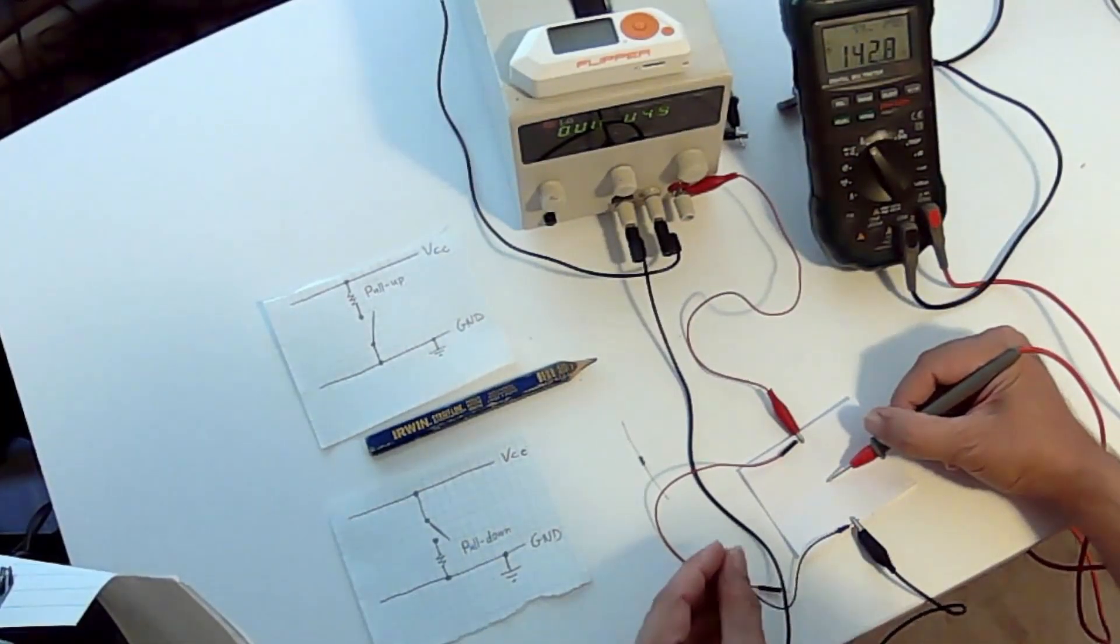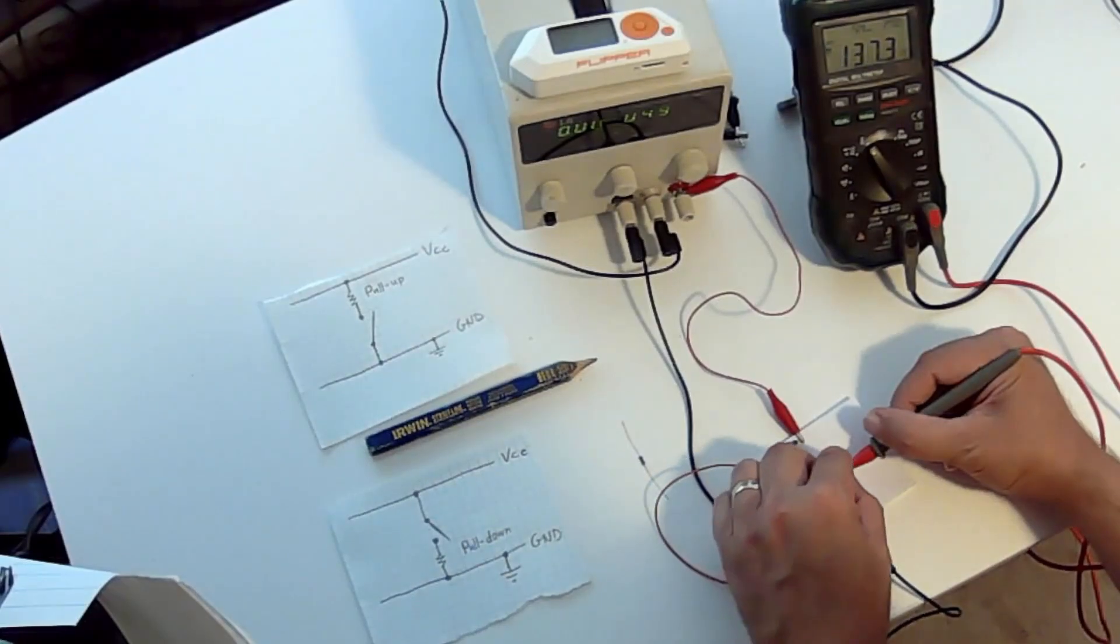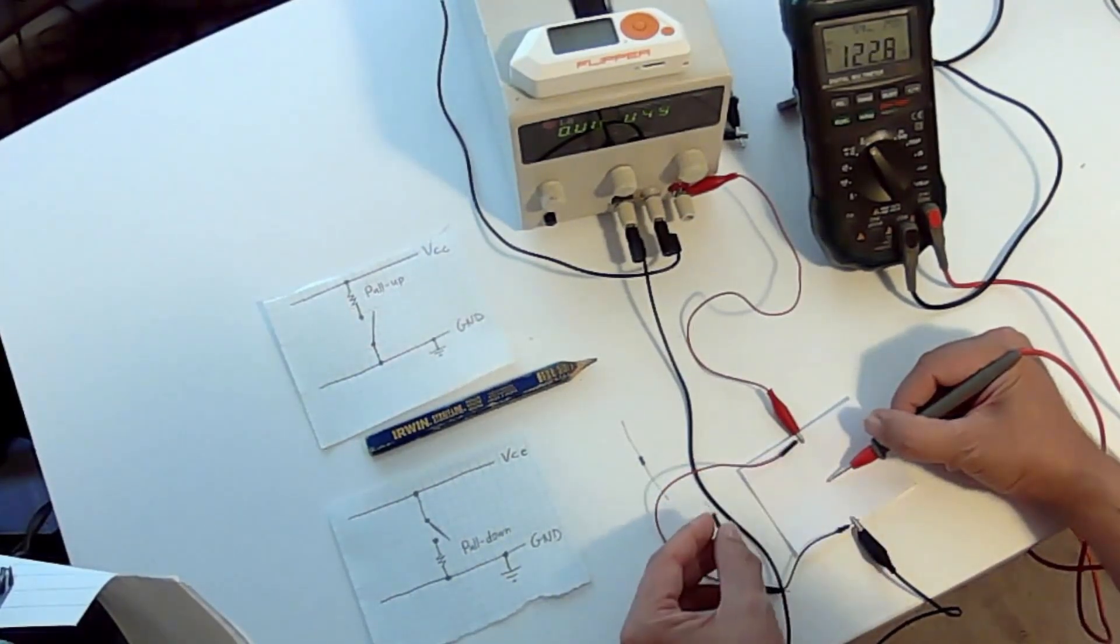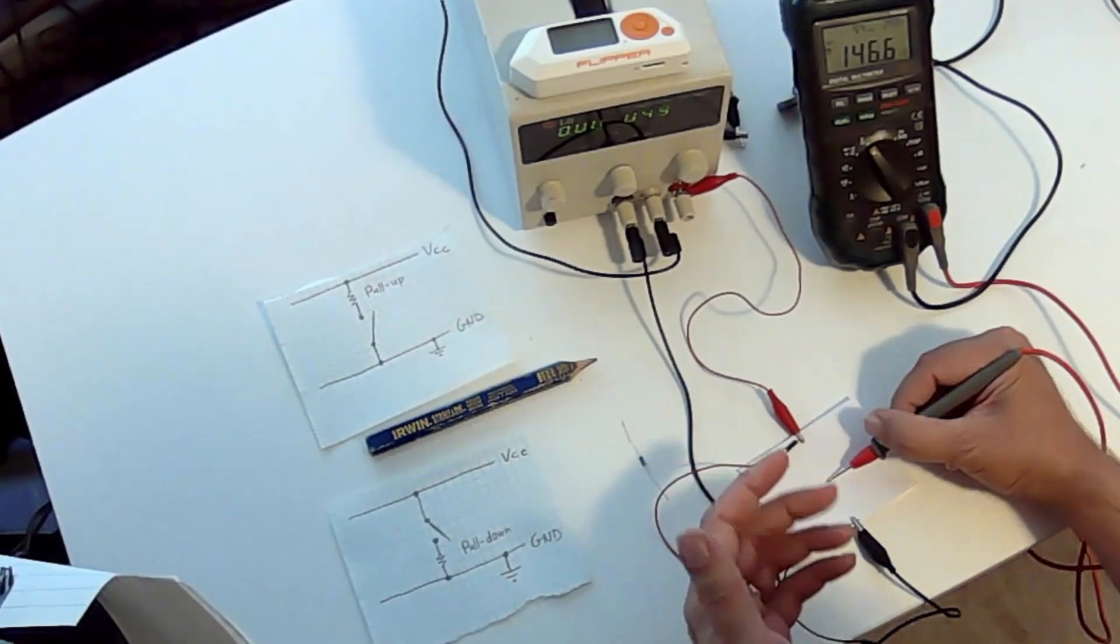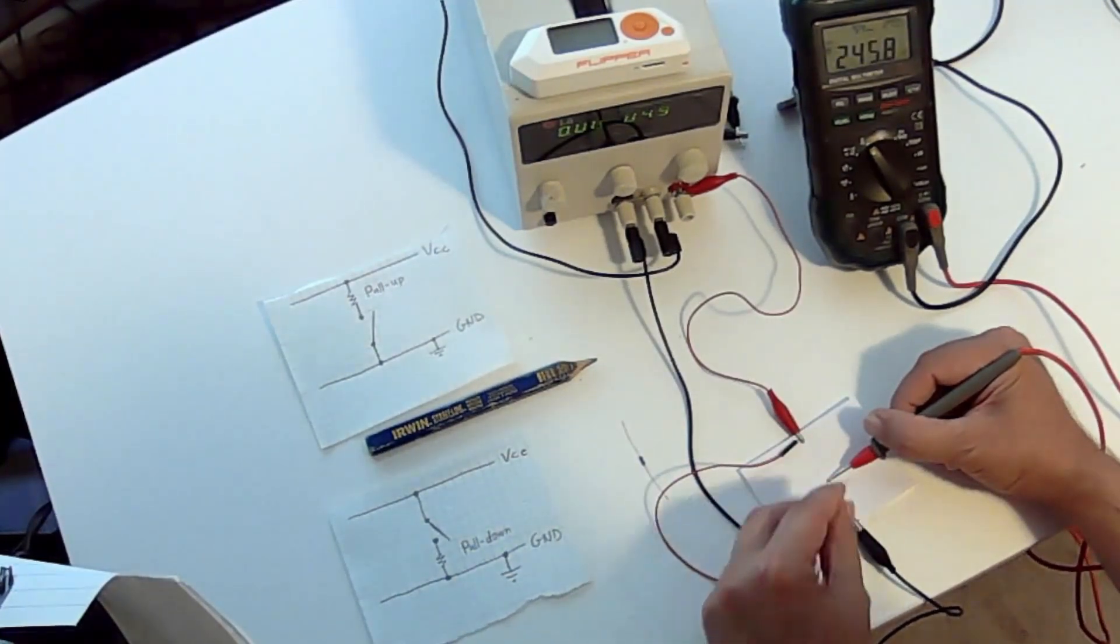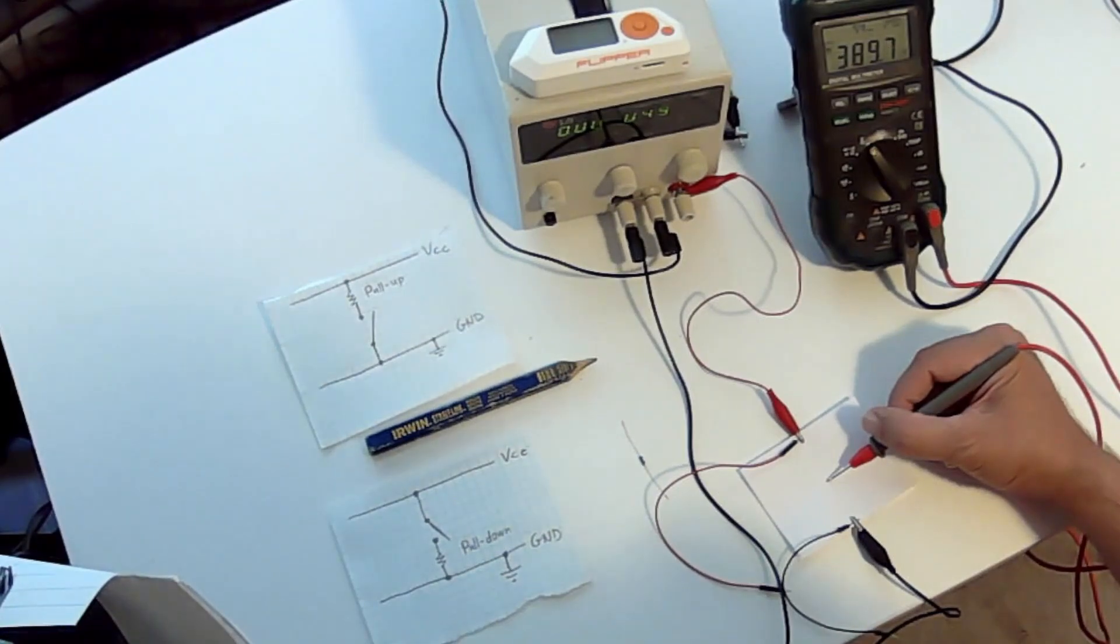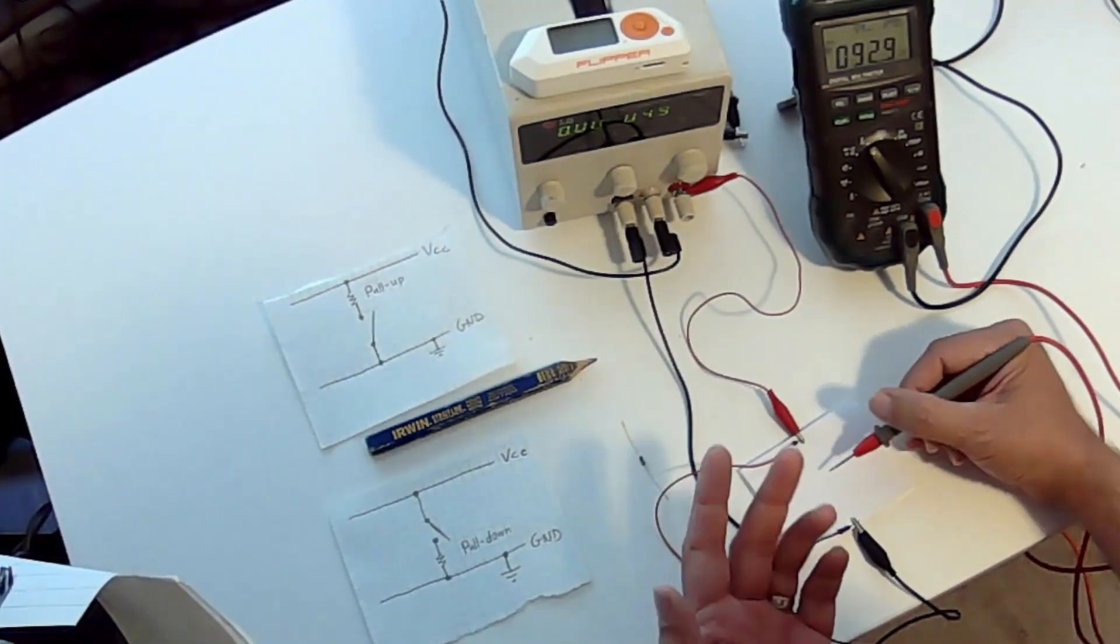And then our ground, similarly, when we connect it, we drop down to zero volts. And then when we disconnect it, we're jumping around in voltage. So this jumping around may get read as a logic high, or it may get read as a logic low.